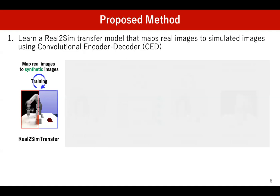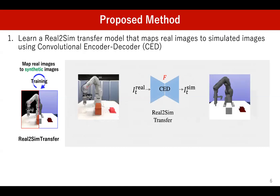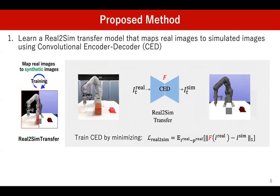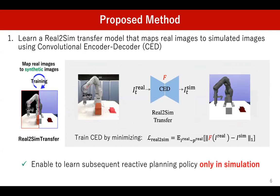In the first module, we train a real-to-sim transfer function which maps real images to simulated images using a convolutional encoder-decoder network, by minimizing an image-to-image transfer loss function that encourages generation of simulated images. This real-to-sim transfer module allows us to train the subsequent reactive planning policy only in simulation.